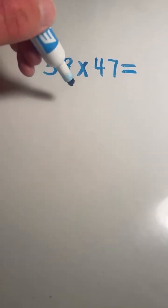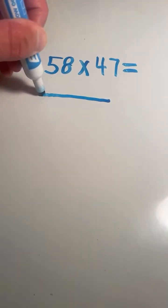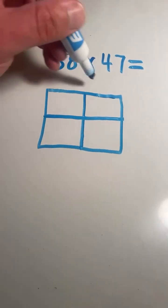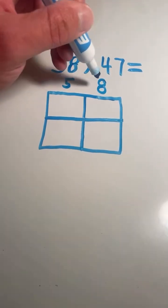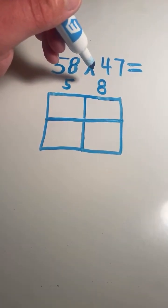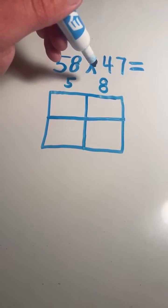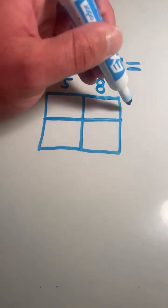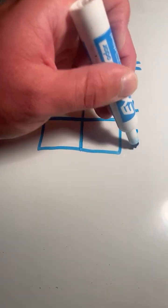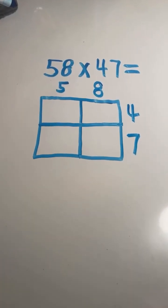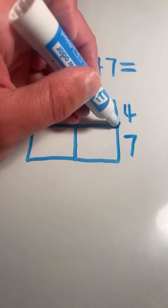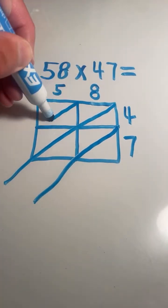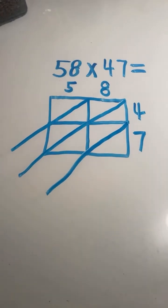Alright, 58 times 47. I'm going to draw my lattice method model — each digit in the problem gets its own box. So for the two top boxes we have 5 and 8 for the number 58, and along the side we have 4 and 7. Next we're going to draw a diagonal line through each of the squares. Now that we have our lattice method model, we are ready to multiply.